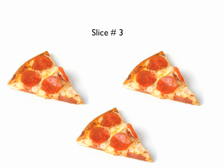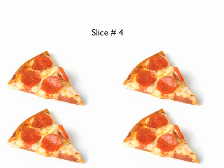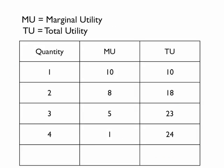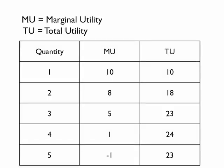After consuming the third slice, your marginal utility is 5 and your total utility is 23. After consuming the fourth slice, your marginal utility is 1 and your total utility is 24. After consuming the fifth slice, your marginal utility is negative 1 and your total utility is 23.